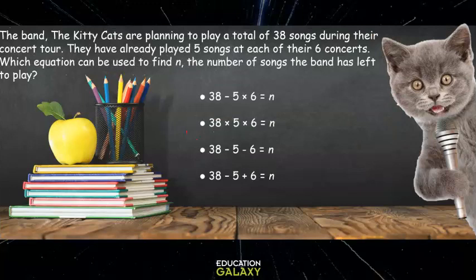Let's check out this problem. The band, the Kitty Cats, are planning to play a total of 38 songs during their concert tour. They have already played 5 songs at each of their 6 concerts. Which equation can be used to find N, the number of songs the band has left to play?